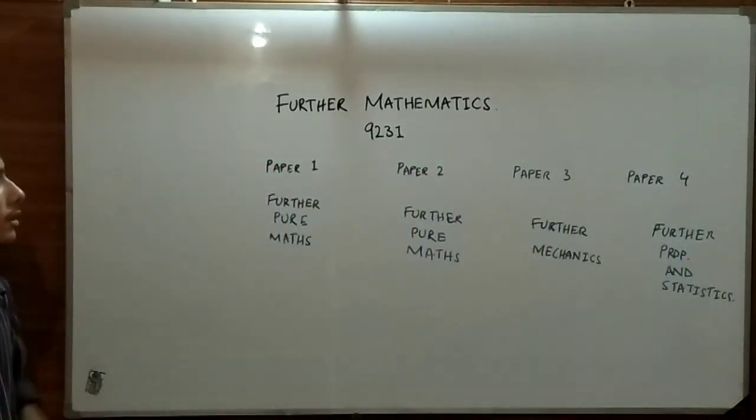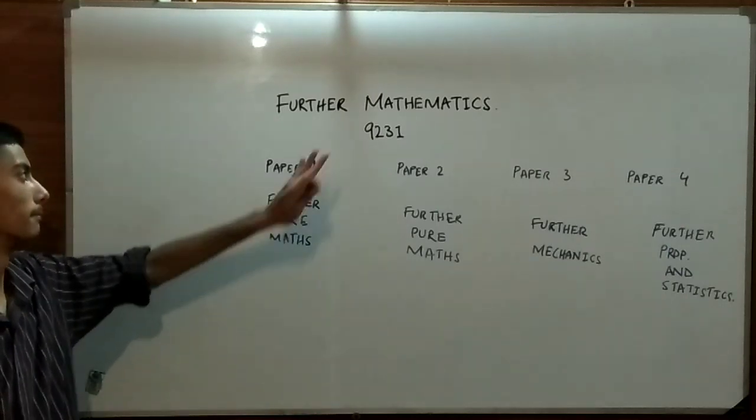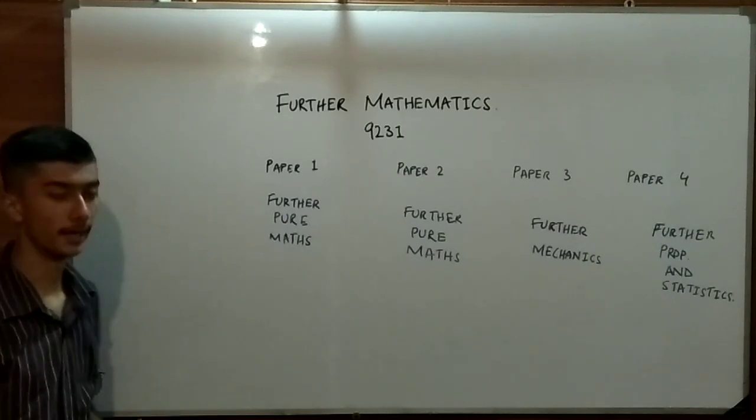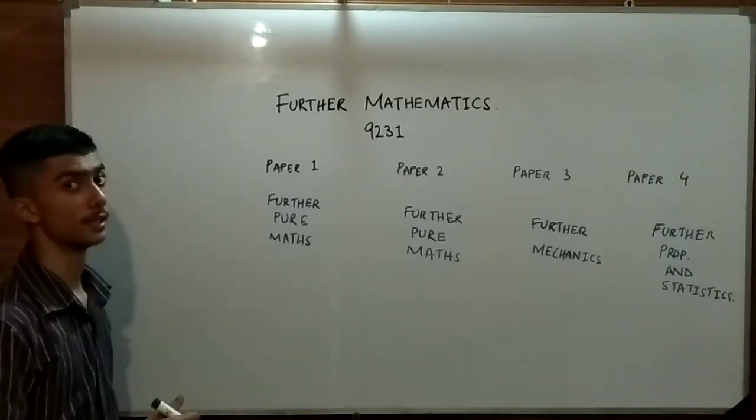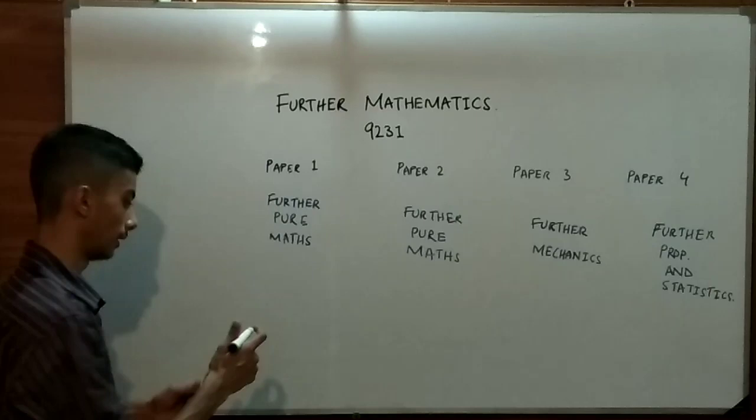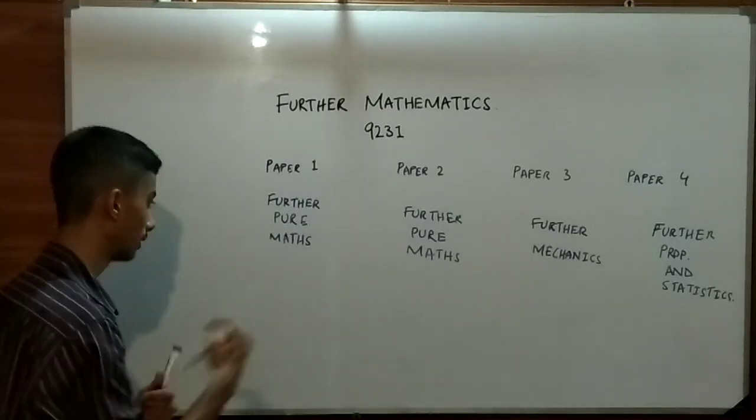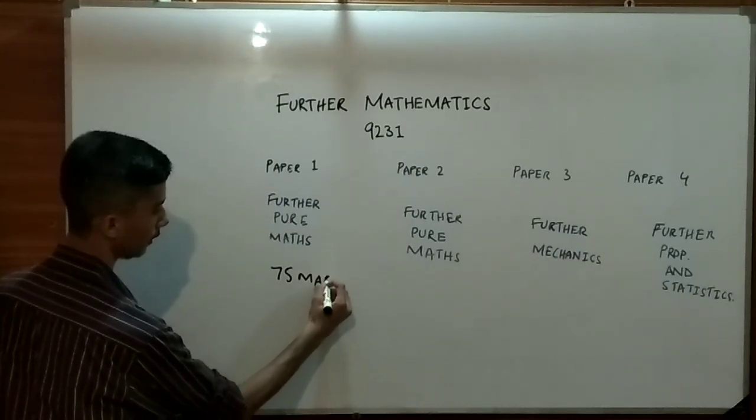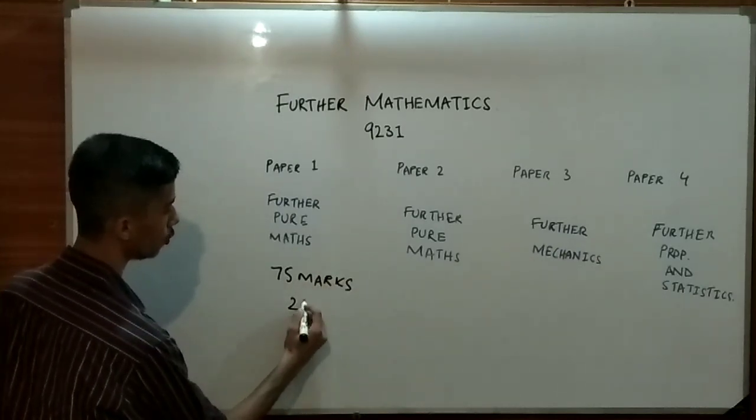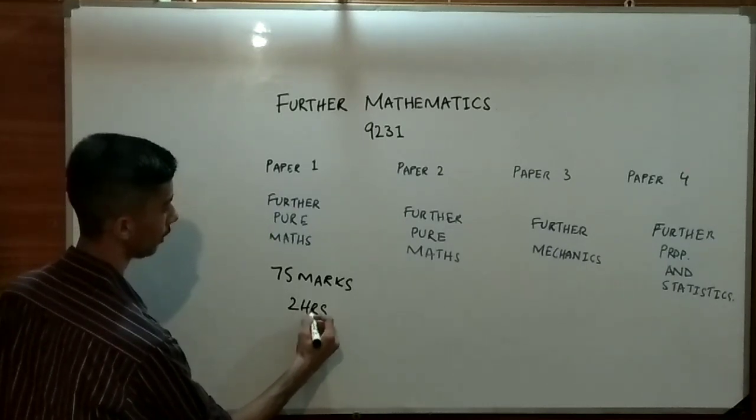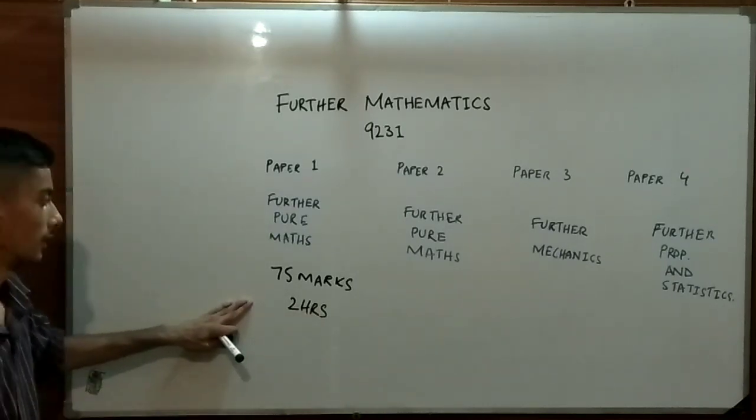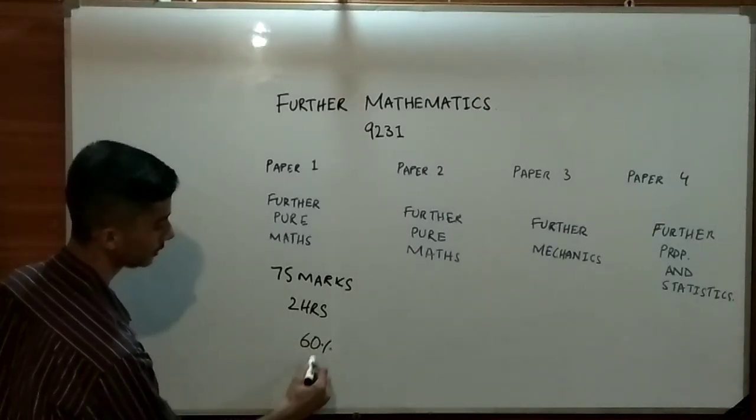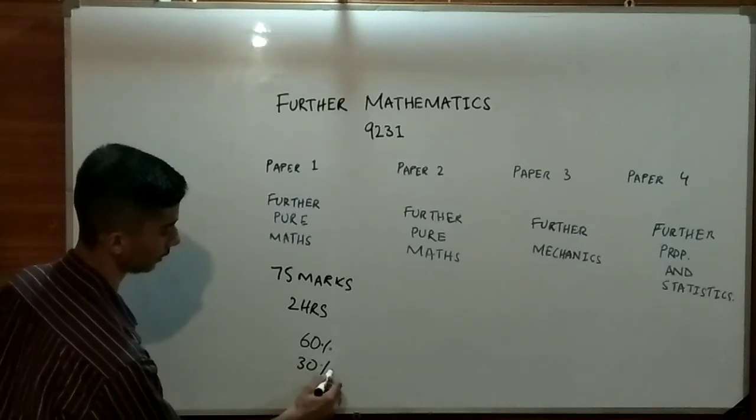These are the four papers in further mathematics 9231. Paper 1 can be taken in AS and it is comprised of 75 marks. You have a 2 hours duration to complete this paper. And AS for the mathematics it has a 60%, whereas in A-levels it has a 30%.